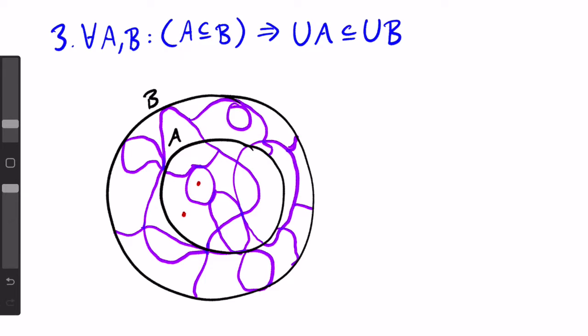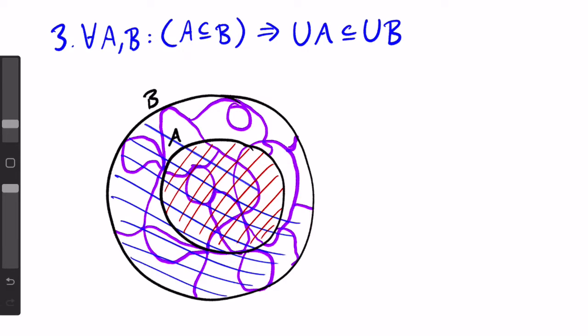So A is the set of this set, this set, this set, etc. Given these partitions, union A is just this entire space inside the A circle and union B is just this entire space inside the B circle. So we can see how if all the members of A are also members of B, union A would be a subset of union B.